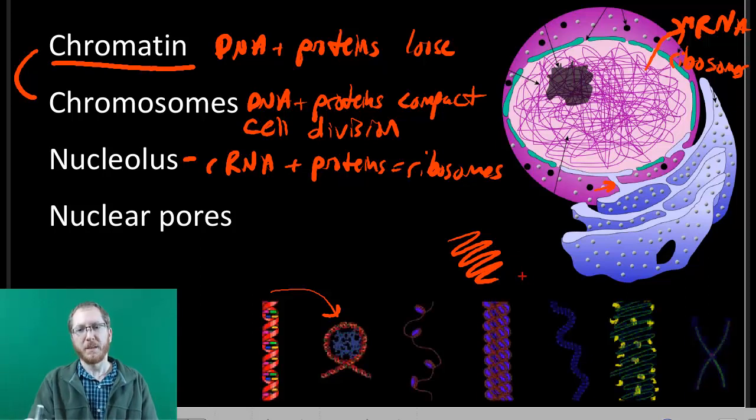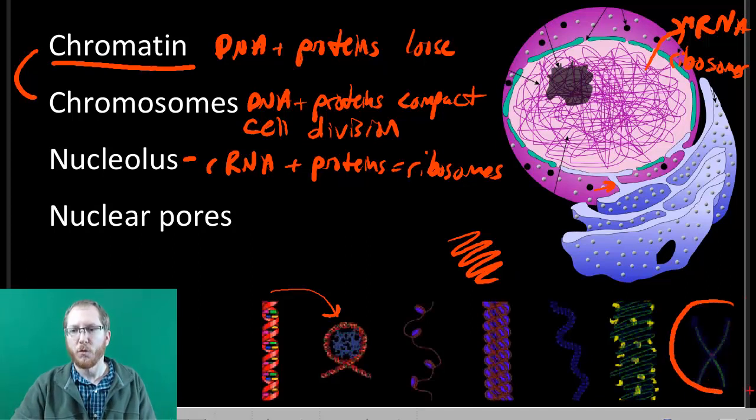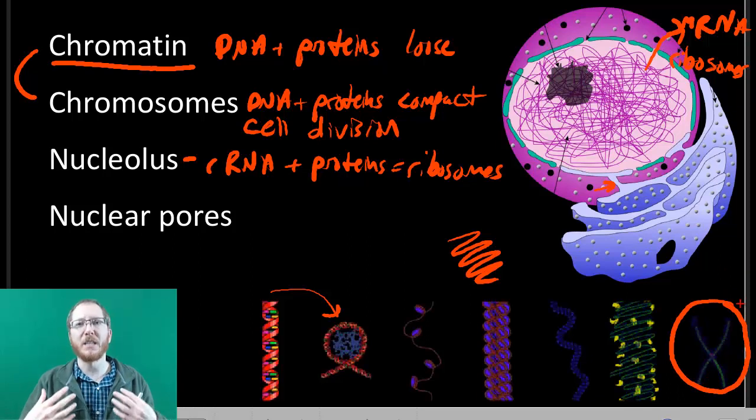And then those loops can actually go through and form loops. So we've got these long strands of looped fibers. And then those can start to go loop again. And that's ultimately how we get to a chromosome.